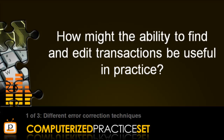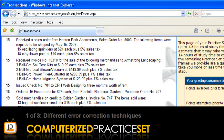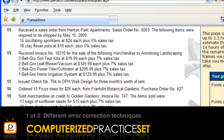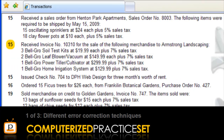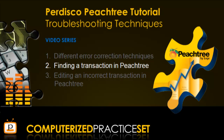How might the ability to find and edit transactions be useful in practice? Let's consider the Pedisco Peachtree practice set. In the example before you, the student has learnt that they have incorrectly recorded a credit sale transaction on March 15. Instead of entering Armstrong Landscaping, they have entered the customer from the previous transaction, Henton Park Apartments. The first step in correcting this error is to find it. Let's learn how to find a transaction in Peachtree.